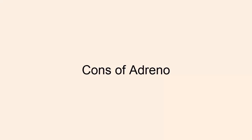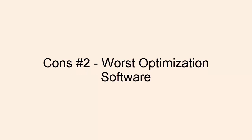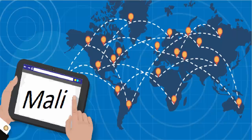Now let's talk about the cons of Adreno. Number one: Expensive. Qualcomm charges more for licensing than ARM's Mali competitors. Therefore, Qualcomm chipsets are more expensive than comparable MTK chipsets. Number two: Worse software optimization. About 20% of all smartphones sold in the world use Mali graphics. As a result, the proportion of Mali on the market is greater and game developers optimize for it first.